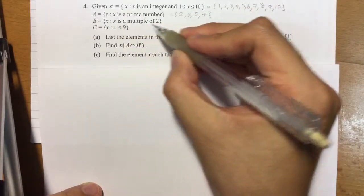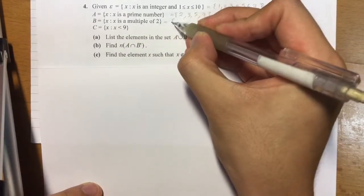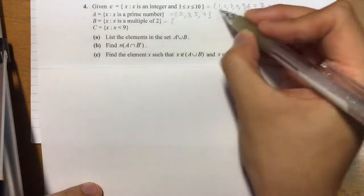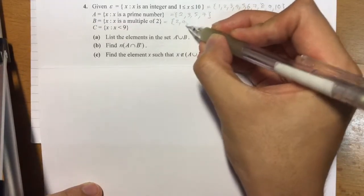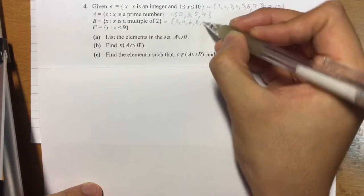How about B? x is any number, a multiple of 2 but still within our universal set. So we have 2, 4, 6, 8 and 10.